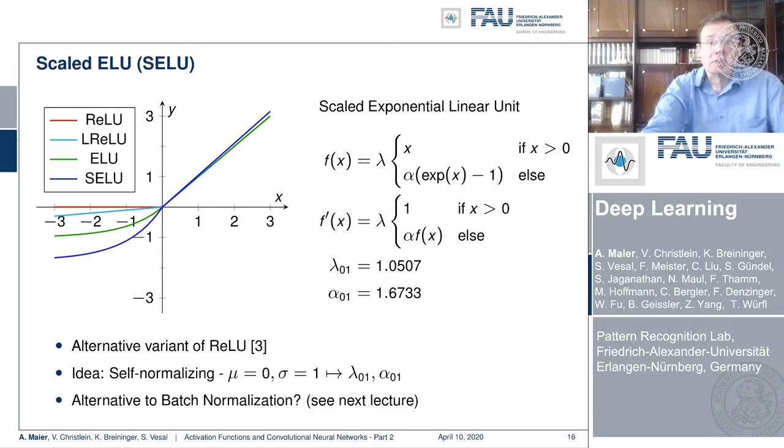Another thing that we can do about internal covariate shift is batch normalization. And this is something that we'll talk about in a couple of videos.